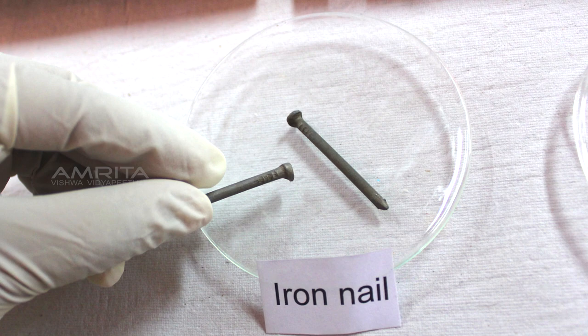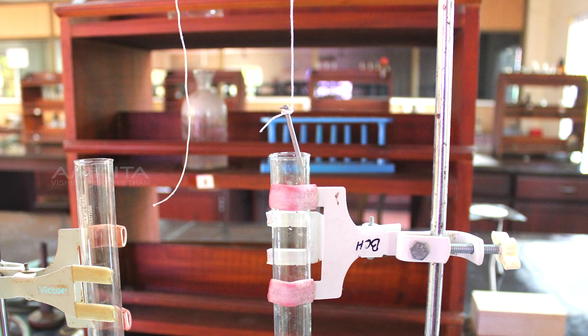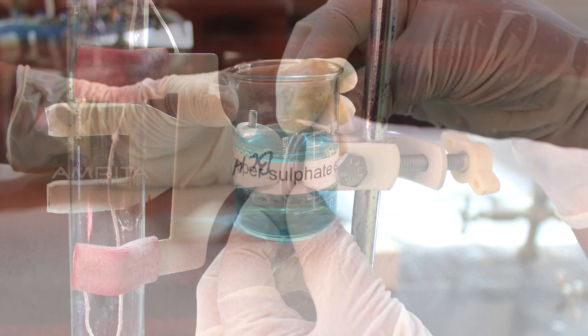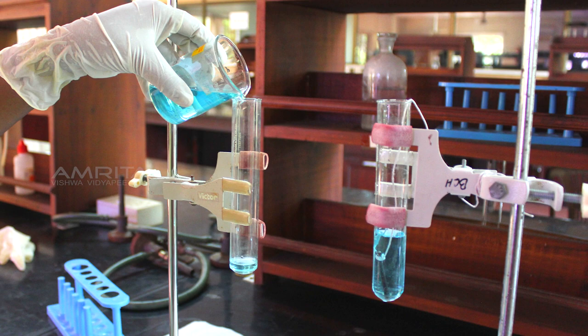Then tie the other end of the thread to the stand. Take copper sulphate solution in a beaker and pour some of it into both the boiling tubes. Keep the apparatus undisturbed for a day.